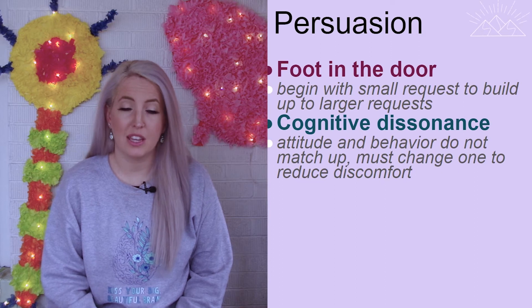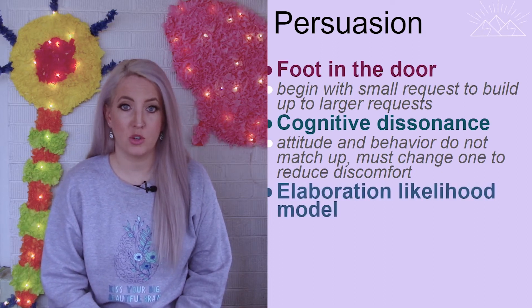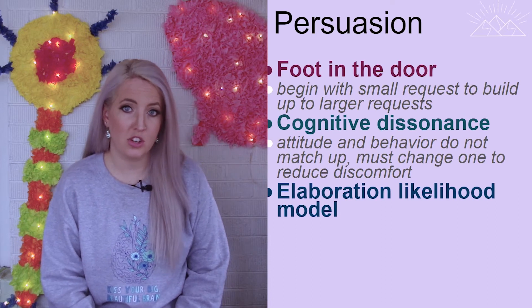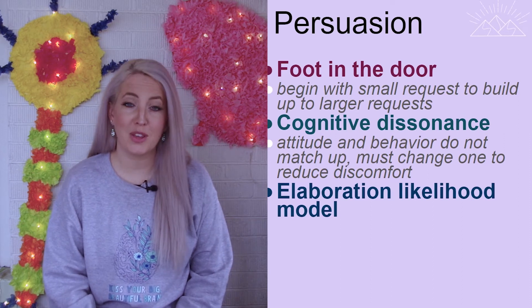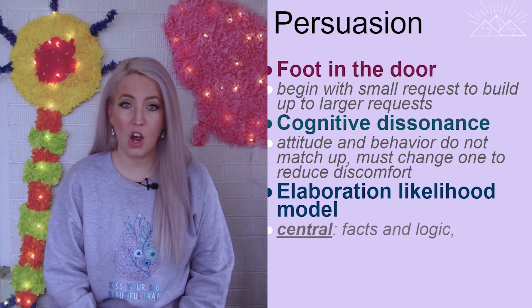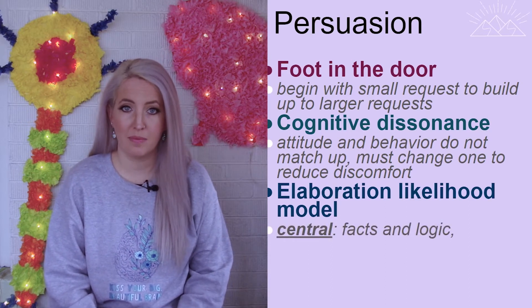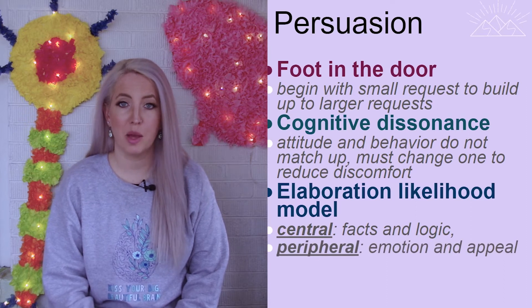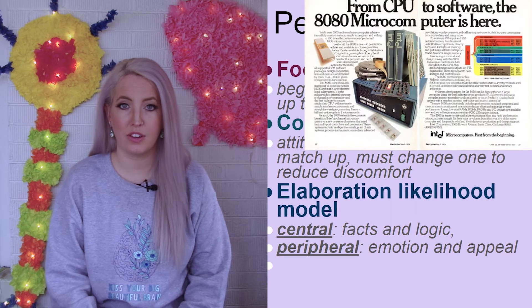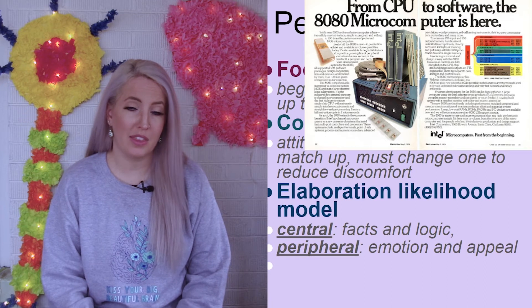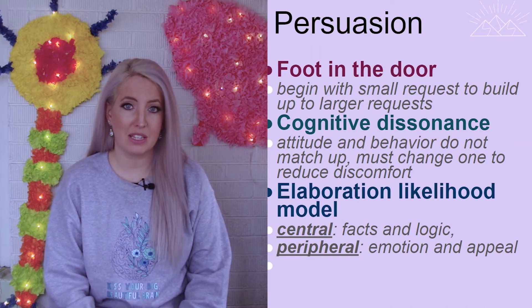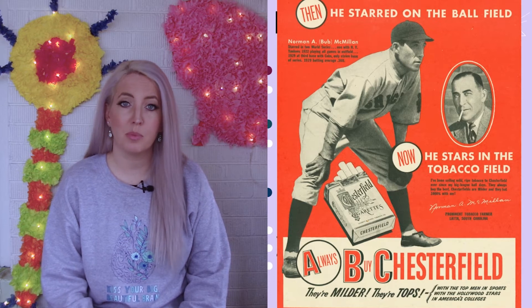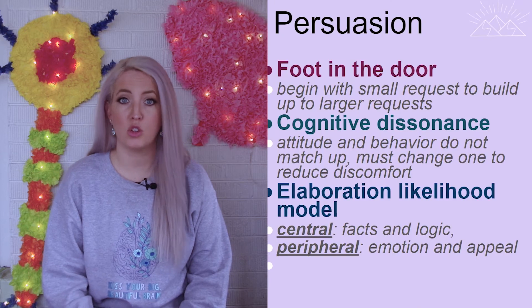Another persuasion technique is the elaboration likelihood model, which addresses how we convince someone our product is worth buying. There are two routes: the central route, which uses facts and logic to explain exactly why a product is great; and the peripheral route, which focuses on appeal — think celebrities endorsing products or commercials that evoke a specific emotion rather than discussing the product itself. Using the peripheral route is often a very successful way to convince someone to purchase.